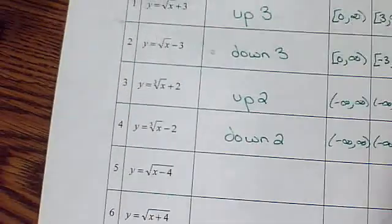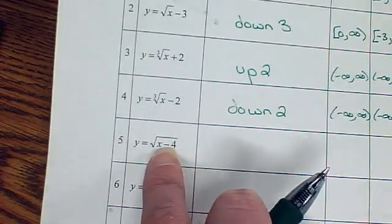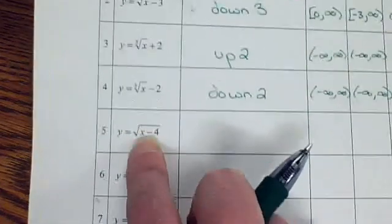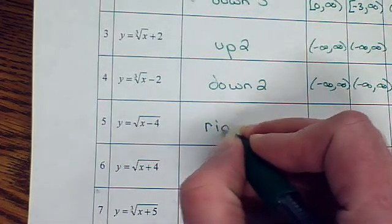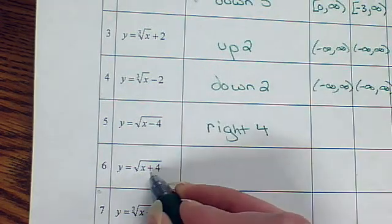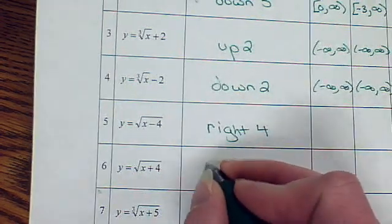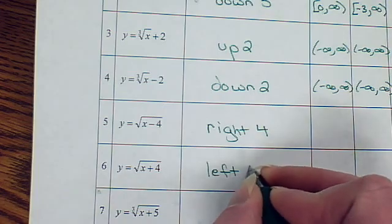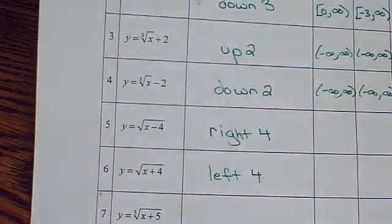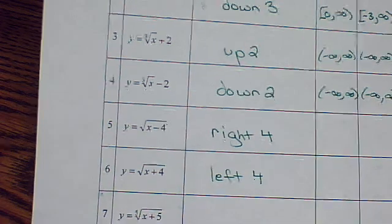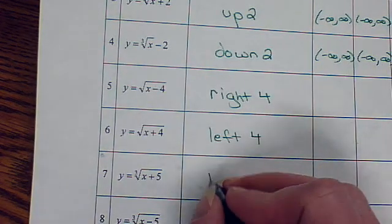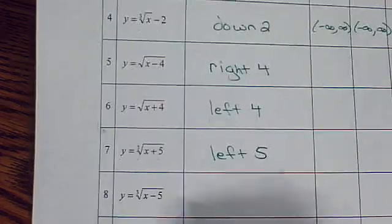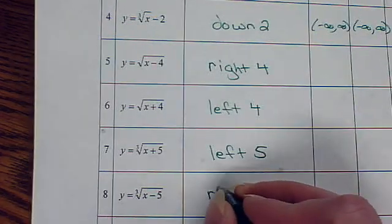So, let's just continue with the translations. What happens when I subtract 4 from the x? I hope you remember that from previously. It is going to move it right 4. What happens when we add 4? It moves it left 4. Remember, what you do to the x comes out opposite from what you would think. So, adding 5 to the x moves it left.